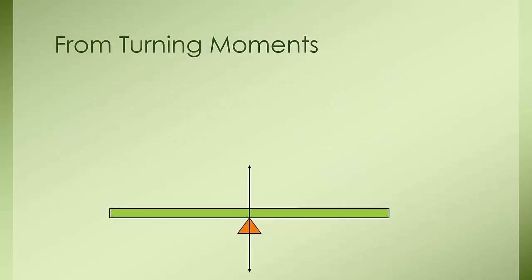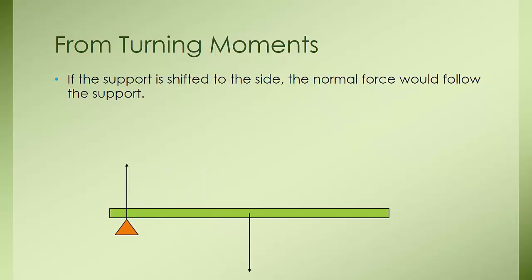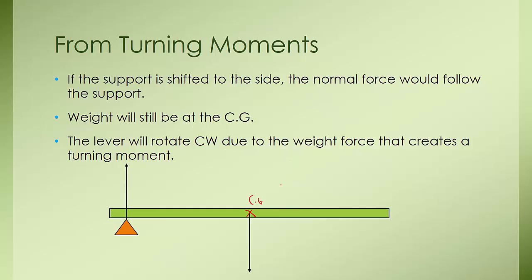However, if the support point is shifted to the side, the normal force will follow the support, but the weight will still act at the center of gravity. One important point: the center of gravity does not follow the support point. There is a special point where the weight of the lever actually acts, and this point is called the center of gravity. If the pivot is off to the side, the weight force acting down at the CG will generate a clockwise turning moment and rotate the lever.